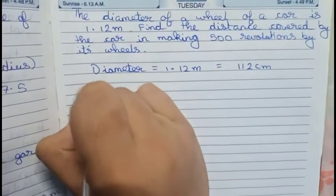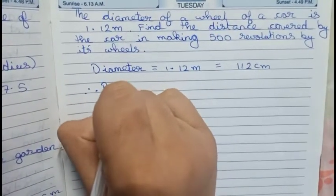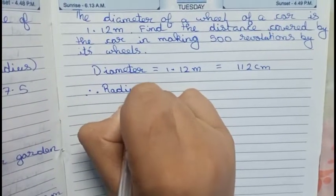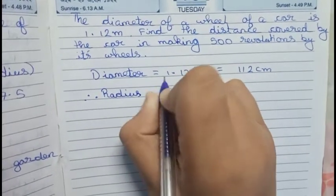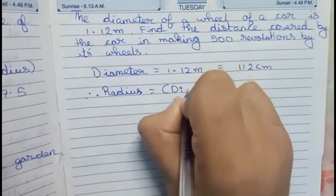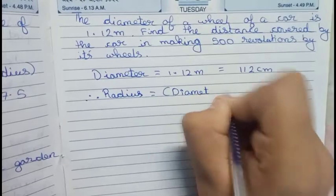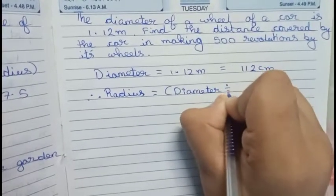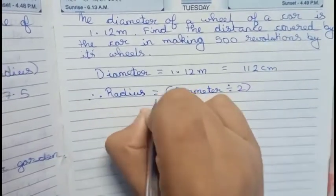Now we find out our radius first. Radius will become the formula diameter divided by 2, so it becomes 112 divided by 2, which becomes 56 centimeters.